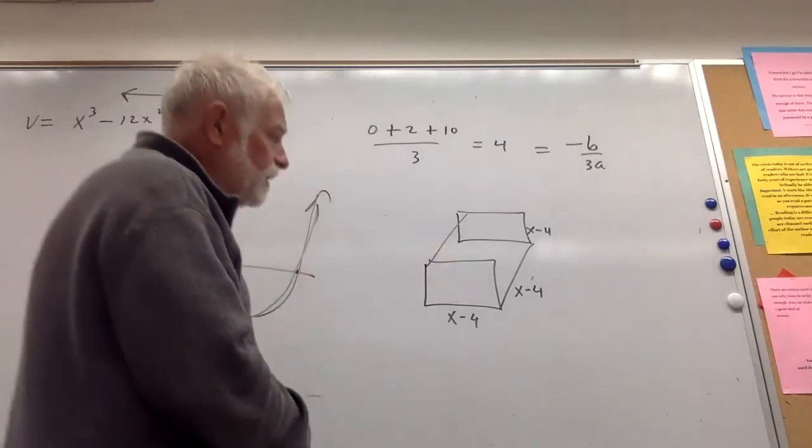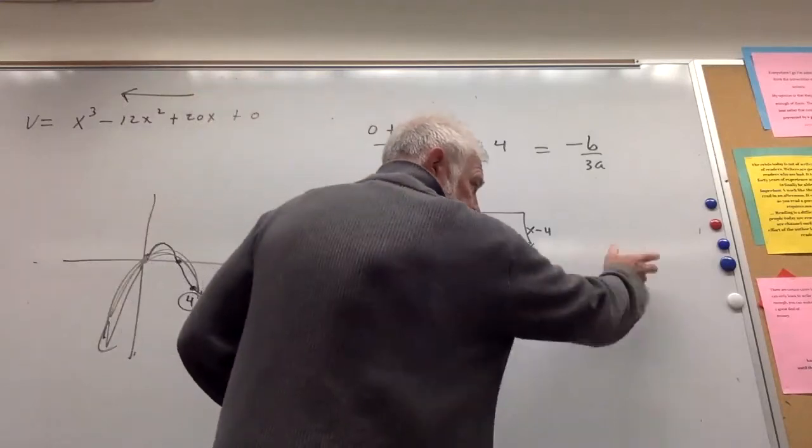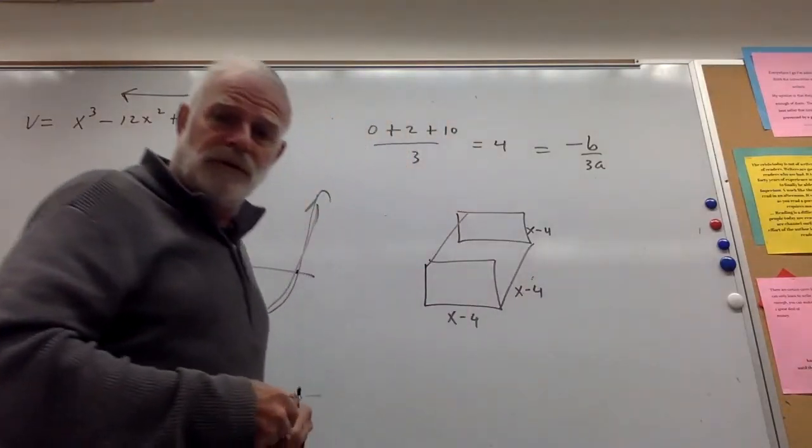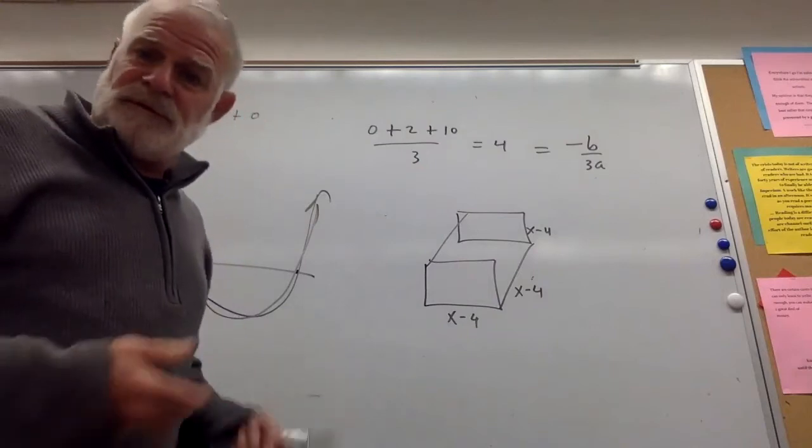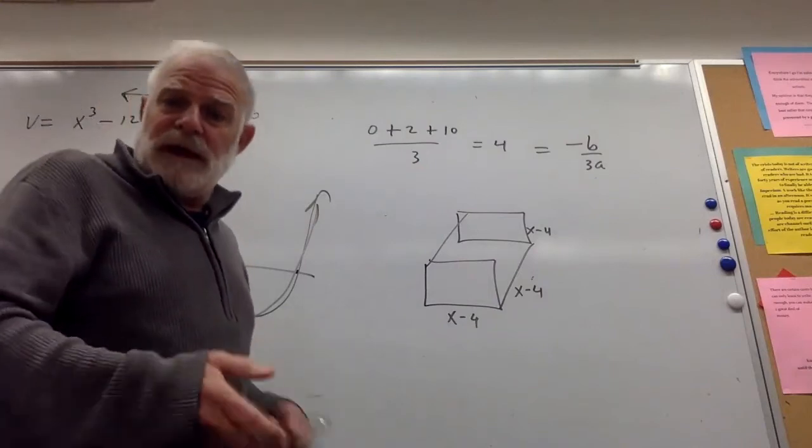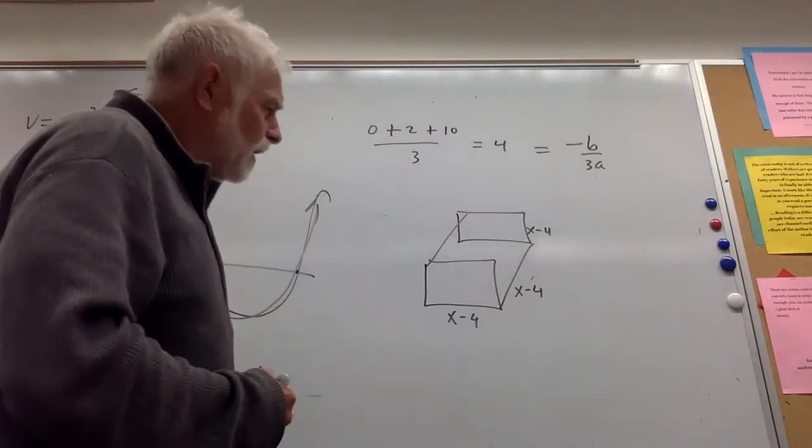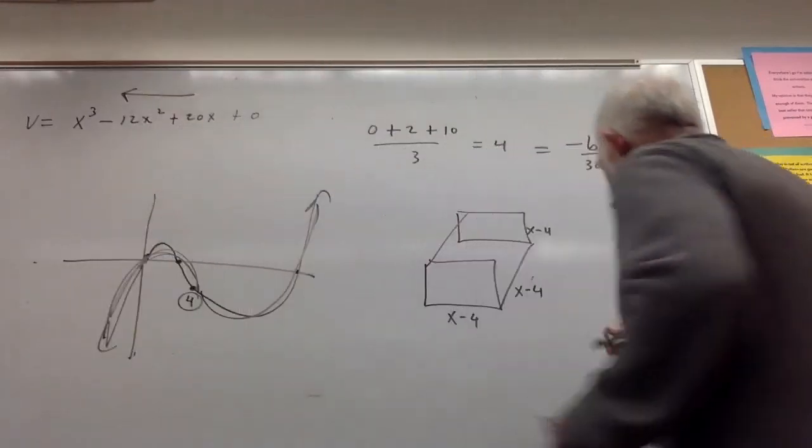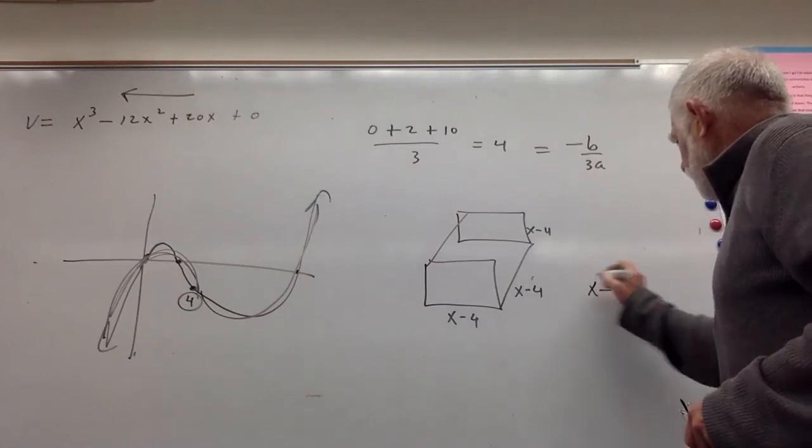This is going to create some linear and constant terms that are different than the original. You've got to do a little algebra, a little factoring to work that out. But let's just multiply (x - 4)³. So let's take a look at what we get.